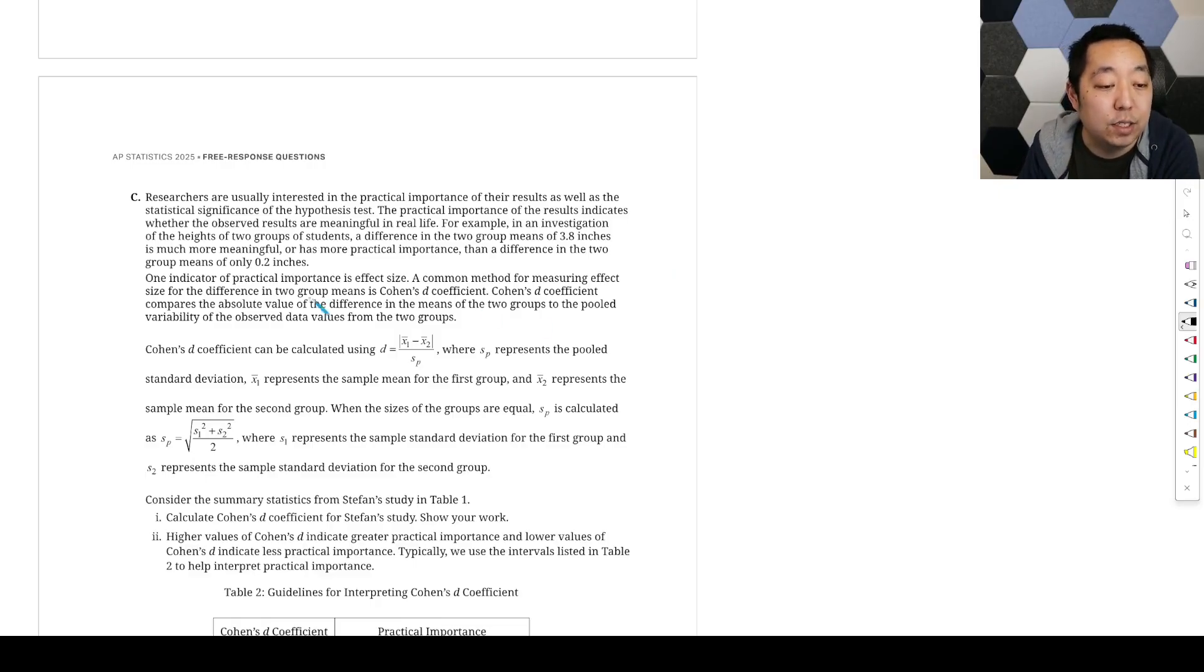One indicator of practical importance is effect size. A common method for measuring the effect size is Cohen's d coefficient. Cohen's d coefficient compares the absolute value of the difference in the mean of the two groups to the pooled variability of the observed data values of the two groups. So we're doing the measured difference divided by what we think the standard deviation is here. They're telling you how to calculate the pooled standard deviation.